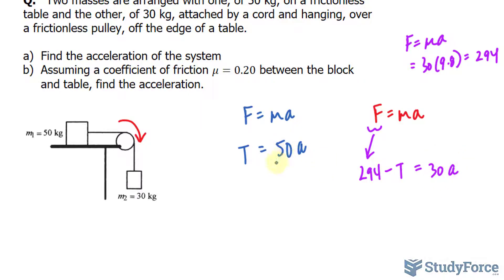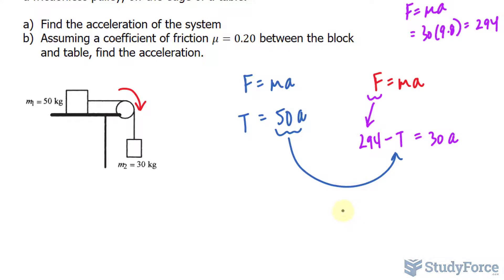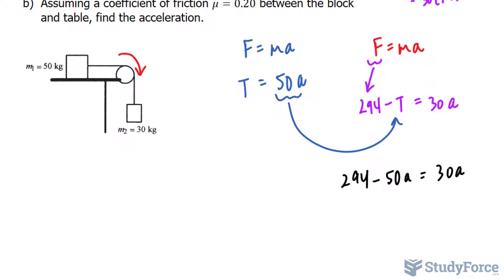At this point, you can substitute this expression where you see a T, and then solve for A. So we have 294 minus 50A, and that is equal to 30A. All we do now is bring over the like term, so we have 30A plus 50A, and that's equal to 80A.